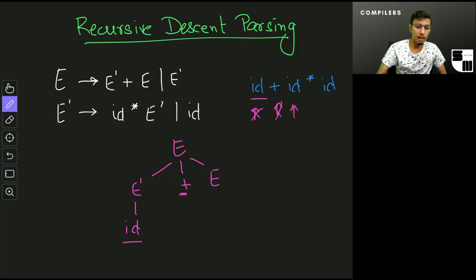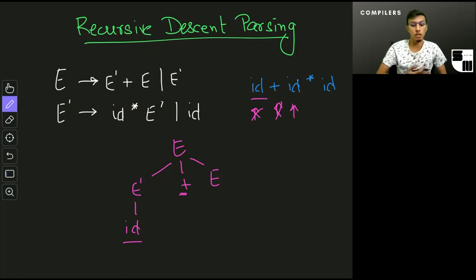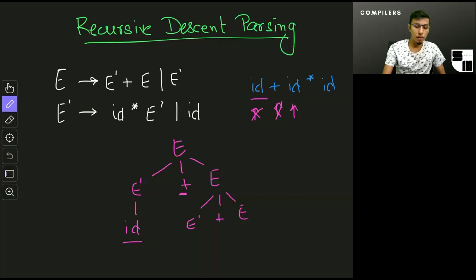Now I have 'id' in the input, and the symbol in my tree is a non-terminal, which is E. I use the first production rule for E, which is E' plus E. For E' I use the production rule 'id times E'', giving me 'id times E''.